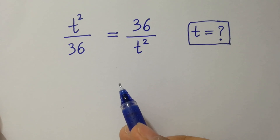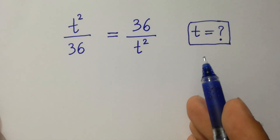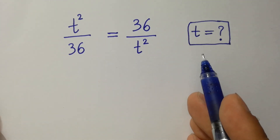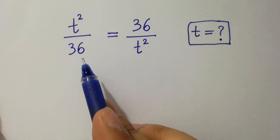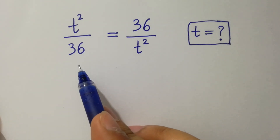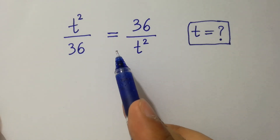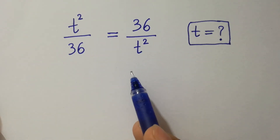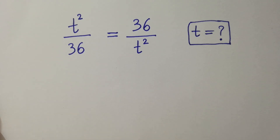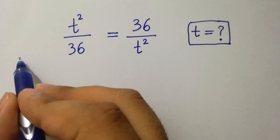Hello friends. Find the value of t if t² over 36 equals 36 over t². Let's have a solution.